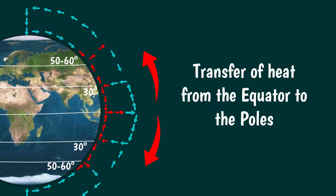The overall effect of the three cells and of atmospheric circulation is to redistribute heat between the equator and the poles, preventing the equator from getting hotter and hotter and the poles from getting colder and colder.